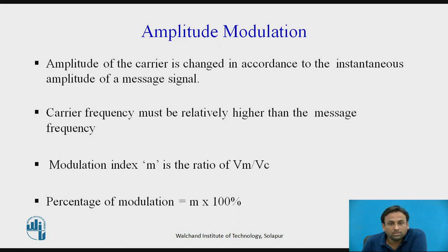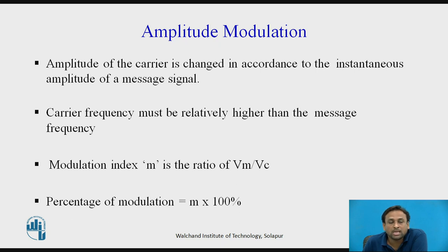The carrier frequency must be relatively higher than the message frequency. If you want to calculate the modulation index, it is the ratio of Vm by Vc, where Vm is the amplitude of the modulating signal and Vc is the amplitude of the carrier signal. To express it as a percentage, multiply by 100%.